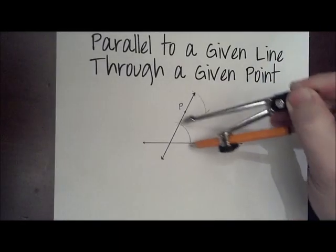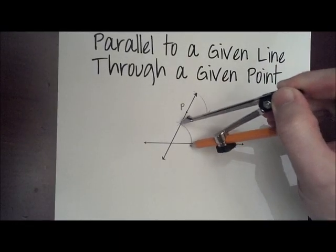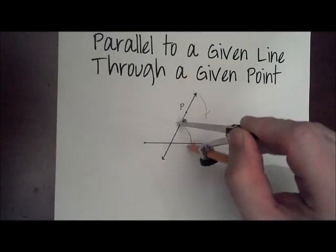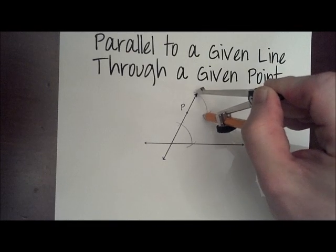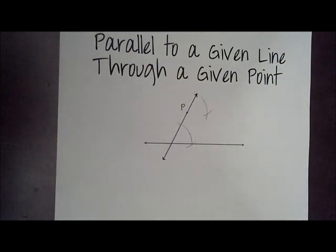Now oftentimes it's smart, instead of measuring the fatness like I did, always put the compass point on the transversal. That way you don't forget that it's got to be on the transversal up here also. So that's another way to do it.